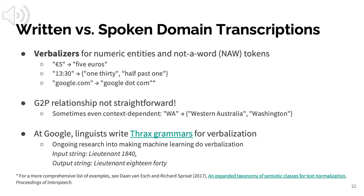This is a very different problem from G2P. There are context-dependent verbalizations — for example, 'WA' could mean Washington state or Western Australia. A lot of the time, THRAX grammars are used for verbalization. There's a lot of machine learning research in this space, but it's quite hard given the diversity of verbalization types needed — times, currencies, URLs, email addresses, and so on. The overview referenced here lists them all, and you'll be surprised at how many there are.